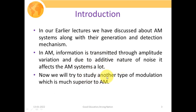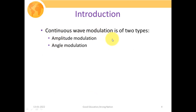We will now study another type of modulation which is much superior to AM in terms of quality. Continuous wave modulation is of two types: amplitude modulation and angle modulation. Modulation is the process in which we transmit information through a continuous carrier wave. If we vary the carrier signal's amplitude with respect to the message signal amplitude, that is termed amplitude modulation.